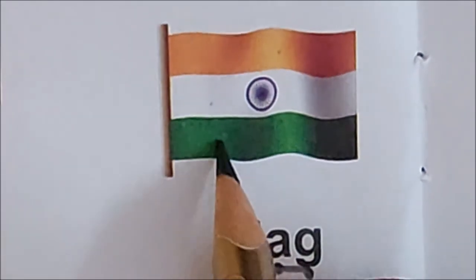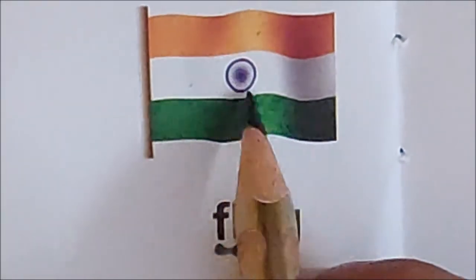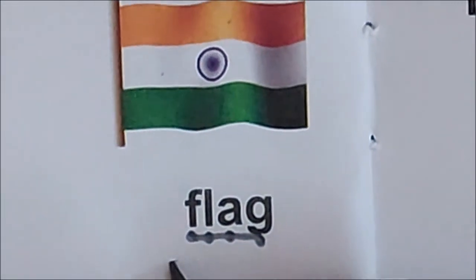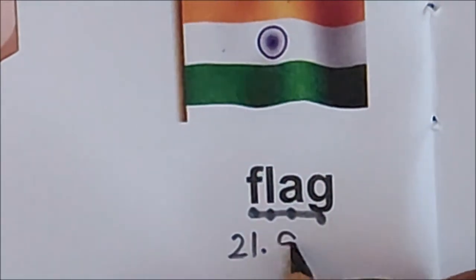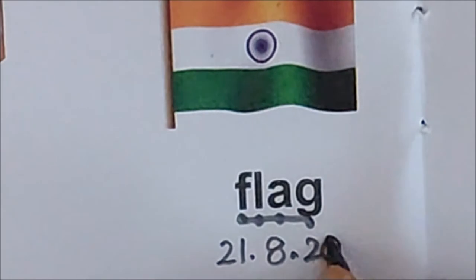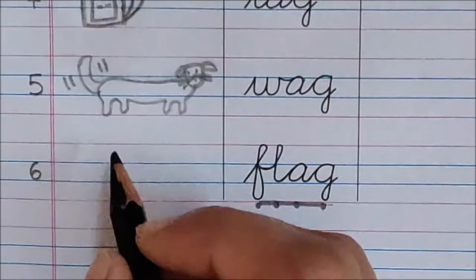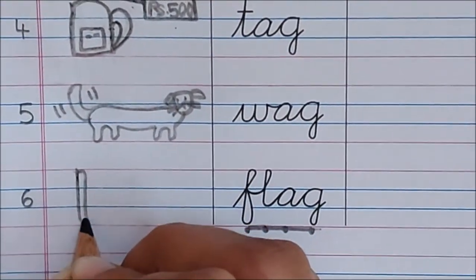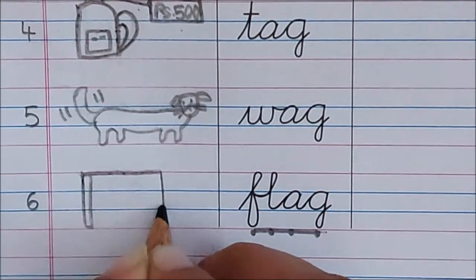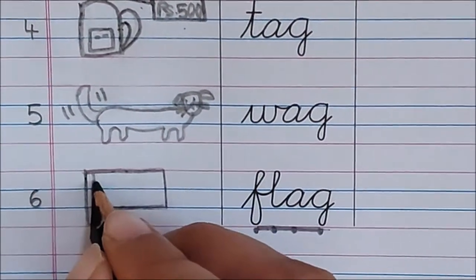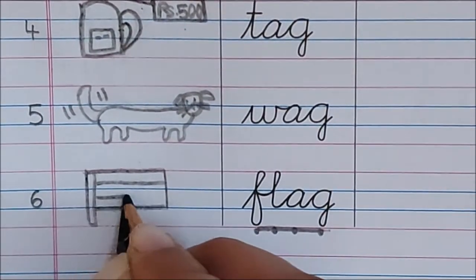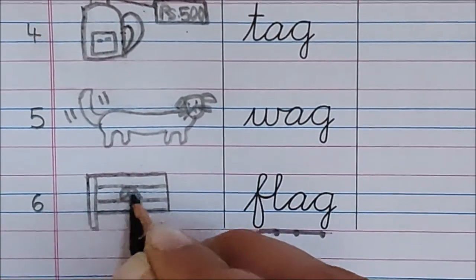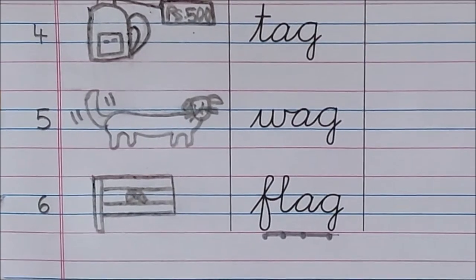This is India's flag with saffron on top, white in the center, green at the bottom, and this is Ashok Chakra. Now children, below the flag word, write down today's date. 21 dot, 8 dot, 20, 20. Now draw a flag here with me, children.